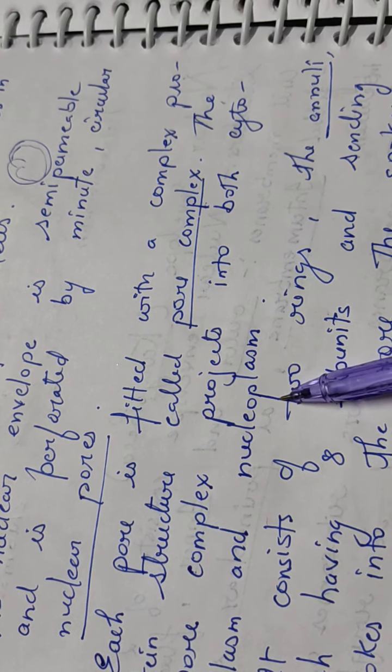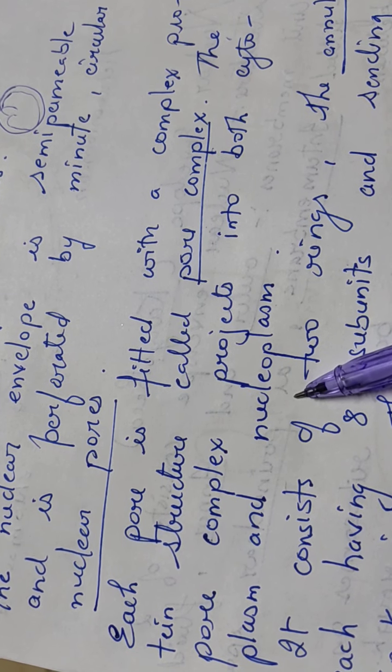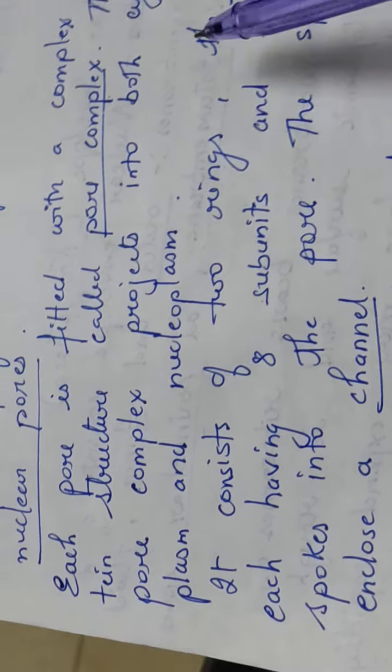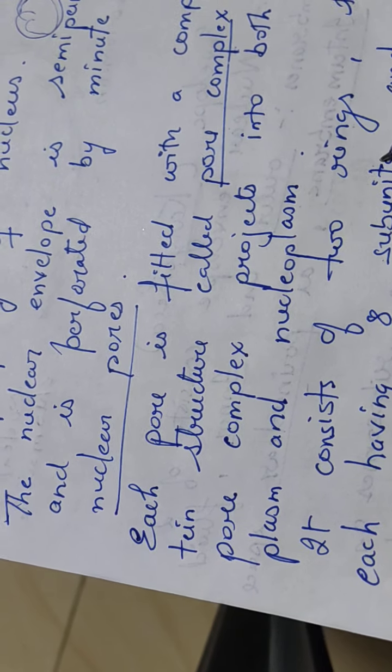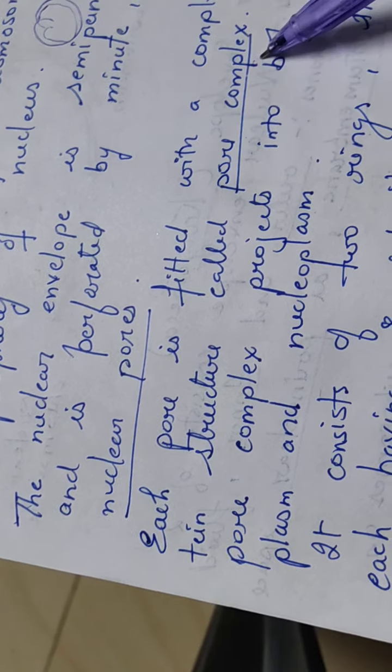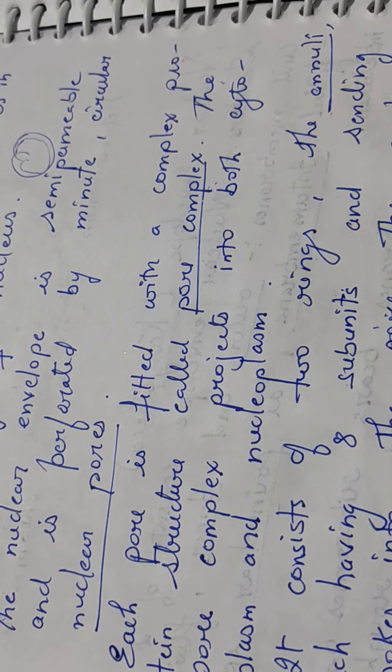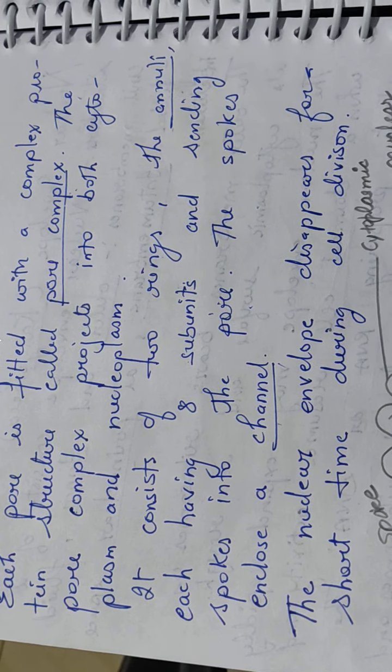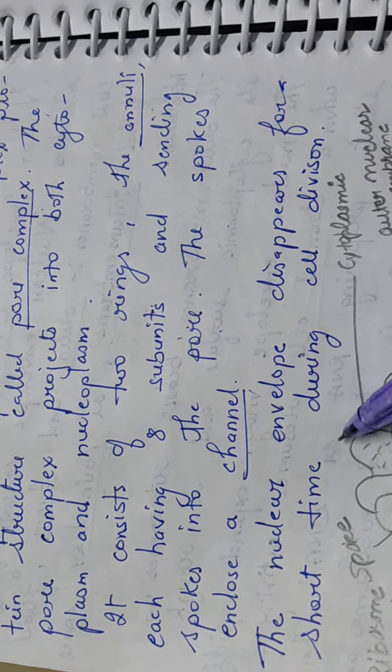This is a diagram of pore complex. The pore complex projects into both cytoplasm and nucleoplasm. Nucleoplasm means the cytoplasm present in nucleus, and cytoplasm is in the cell. It consists of two rings called annuli, each having eight subunits. Two rings make up the pore complex. The spokes enclose a channel, so the two rings with eight subunits each have a central channel that the spokes join together.